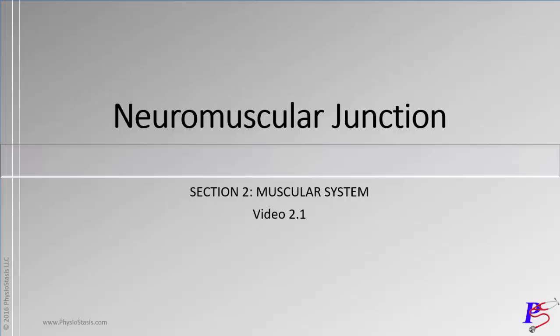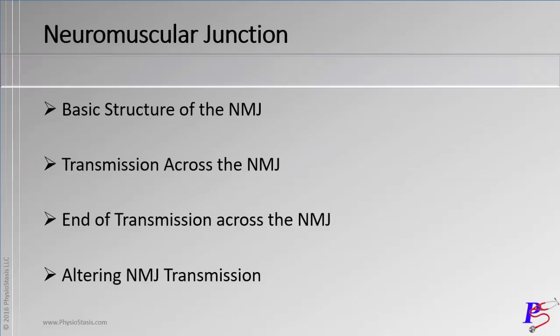We're going to begin section two, the muscular system, by discussing the neuromuscular junction. We're going to divide it into four parts: the basic structure of the neuromuscular junction, the transmission as the impulse continues across from the neuron to the muscle, how the transmission ends, and different diseases, chemicals, and drugs that alter the transmission across the neuromuscular junction.